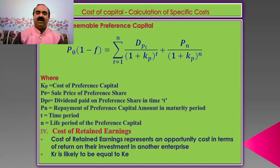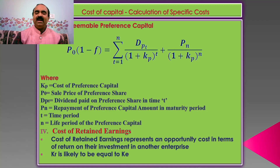4. Cost of retained earnings. Cost of retained earnings represents an opportunity cost in terms of return on their investment in another enterprise. KR is likely to be equal to KE.